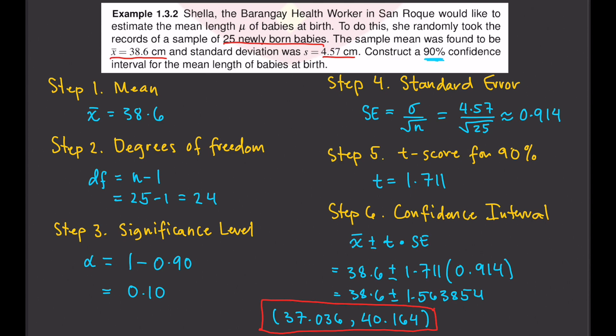That is our 90% confidence interval. We are 90% confident that the mean length of babies at birth in San Roque is between 37.036 centimeters and 40.164 centimeters.